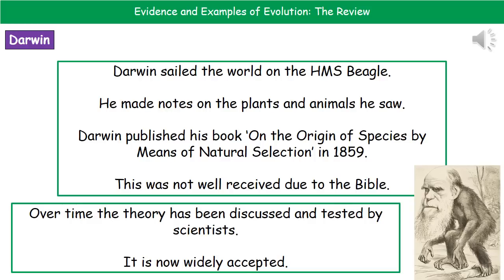Welcome to our review on evidence and examples of evolution. The first person we're going to look at is Charles Darwin. What Darwin actually did was he went on the HMS Beagle and sailed around the world. Every time they came to some new area, he'd make notes on all the plants and animals that he saw, including detailed sketches and observations. When he returned, he published a book called On the Origin of Species by Means of Natural Selection in 1859, which summarised his ideas about natural selection and what led to every organism evolving over time.